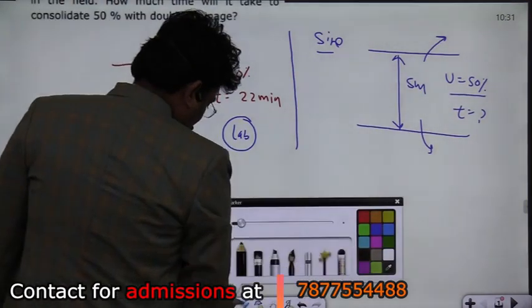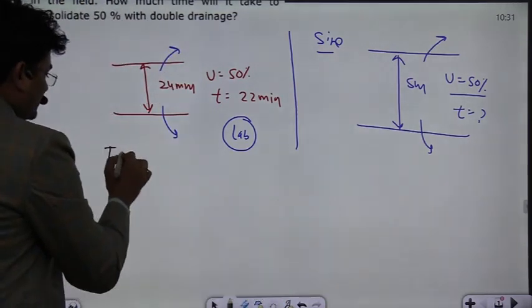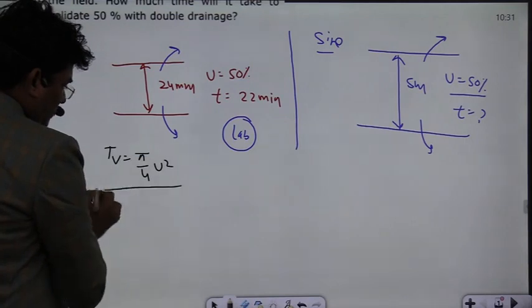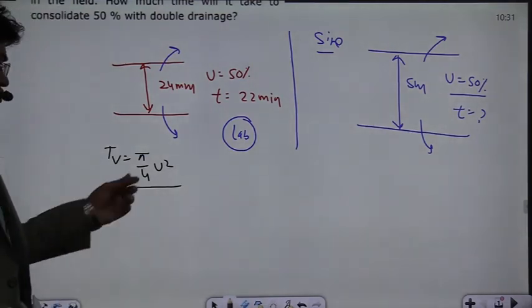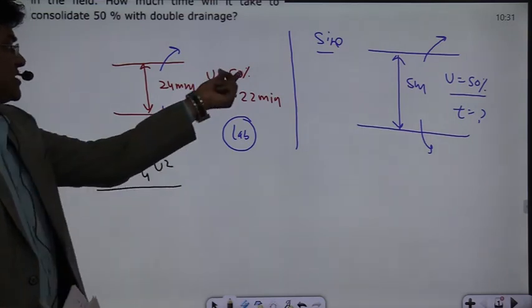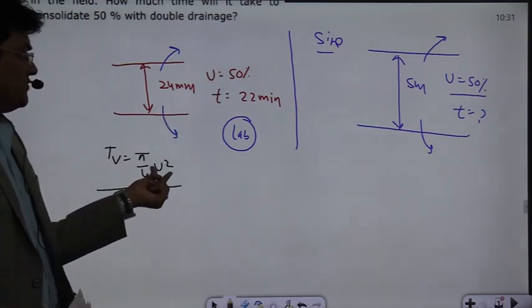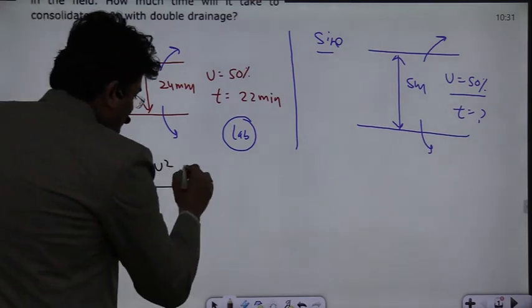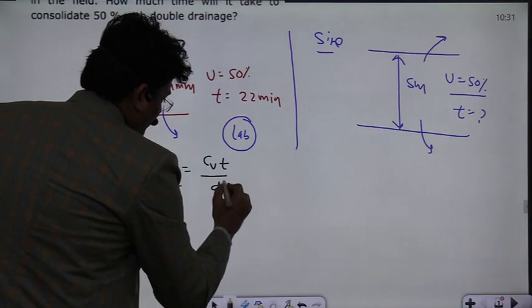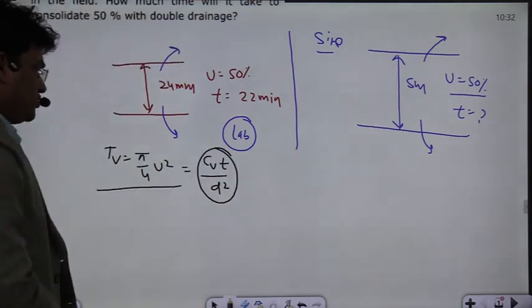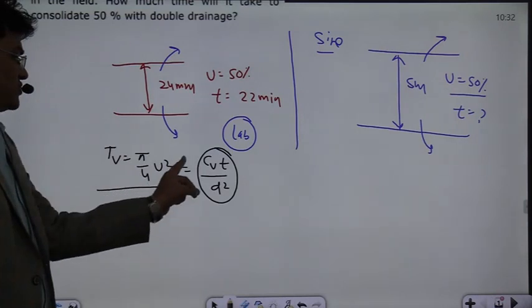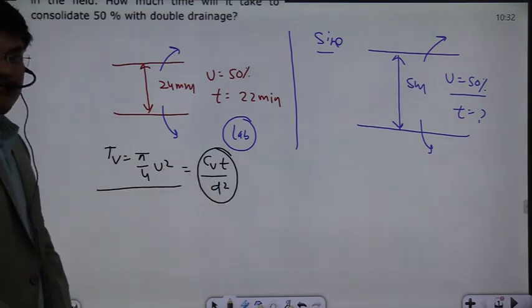For this question, time factor Tv is pi by 4u square, where u is the degree of consolidation. You keep u in fractions and in this case you have u that is 50%. And this is equal to the time factor Tv given by cv into t divided by d square.